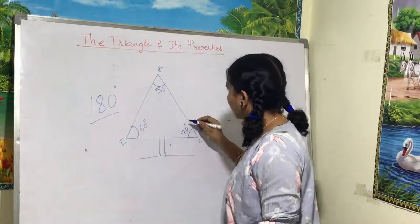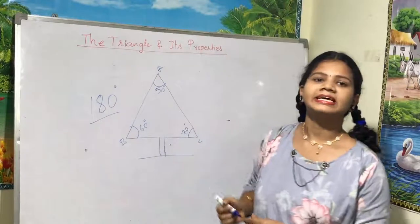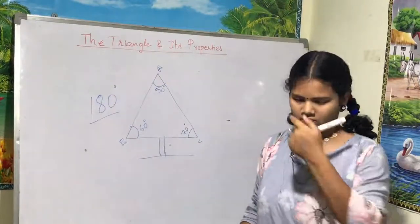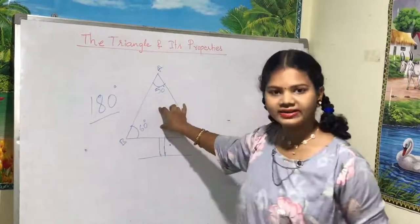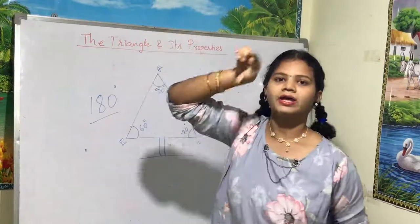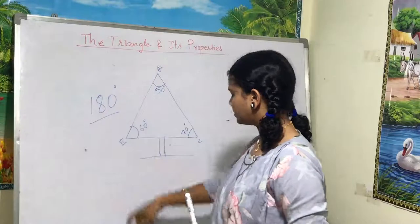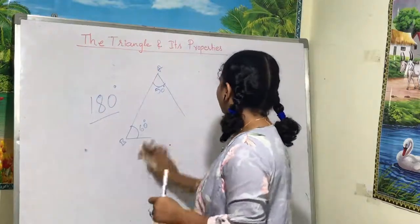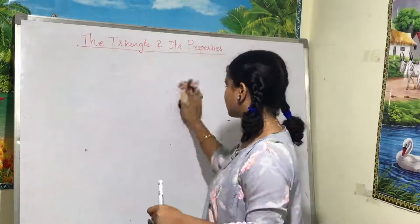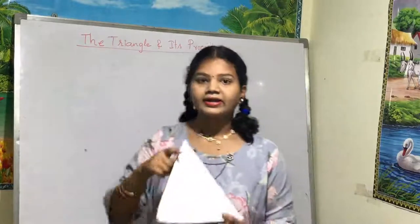When we add all three angles — 50 + 60 + 70 — it gives 180 degrees. This is how we can verify the angle sum property, where all three angles of a triangle always sum to 180 degrees.